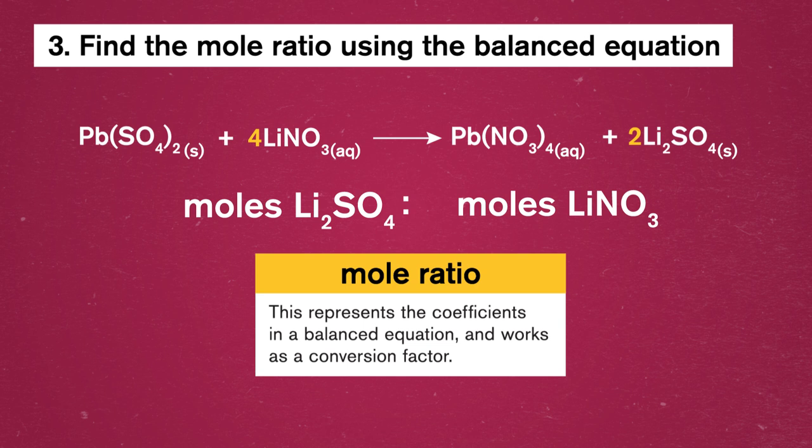In our example, the mole ratio would be a ratio between the number of moles of given lithium sulfate and the number of moles of lithium nitrate. To find the ratio, we need to look at our balanced chemical reaction. This would be a great time to double-check that a reaction is, in fact, balanced.